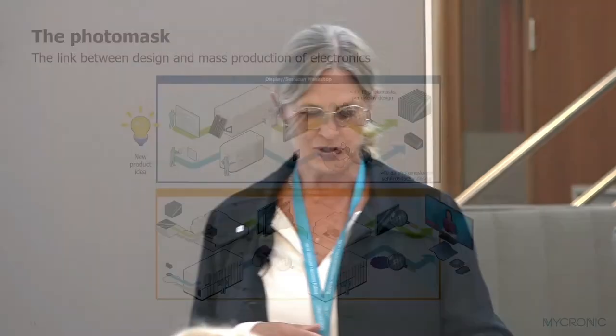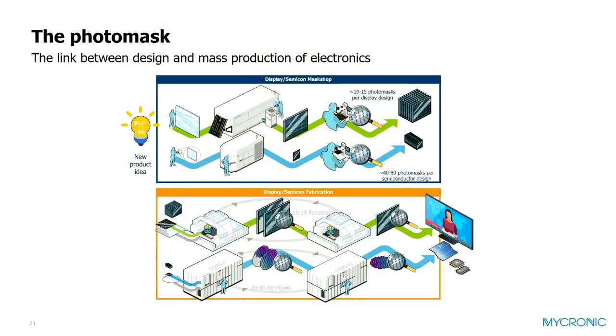I would like to start by describing what we do and where we are in the electronic industry. This picture shows how you make a chip or a display in short. When there is an idea for a new innovation and a new design is created, that design consists of a number of pattern layers, and those pattern layers are written by a mask writer.